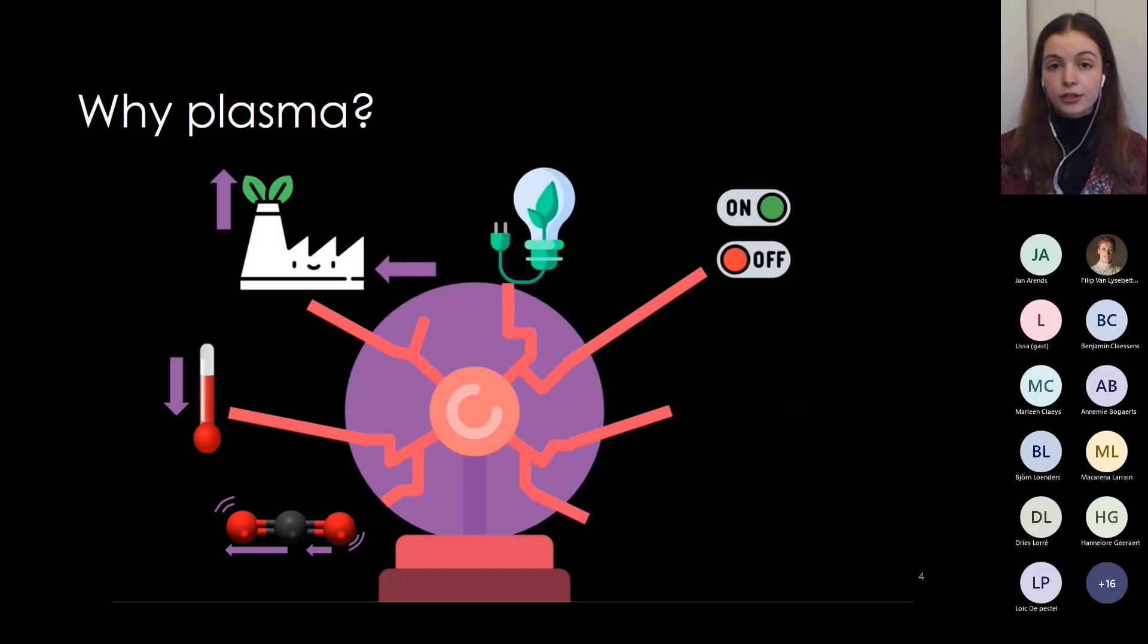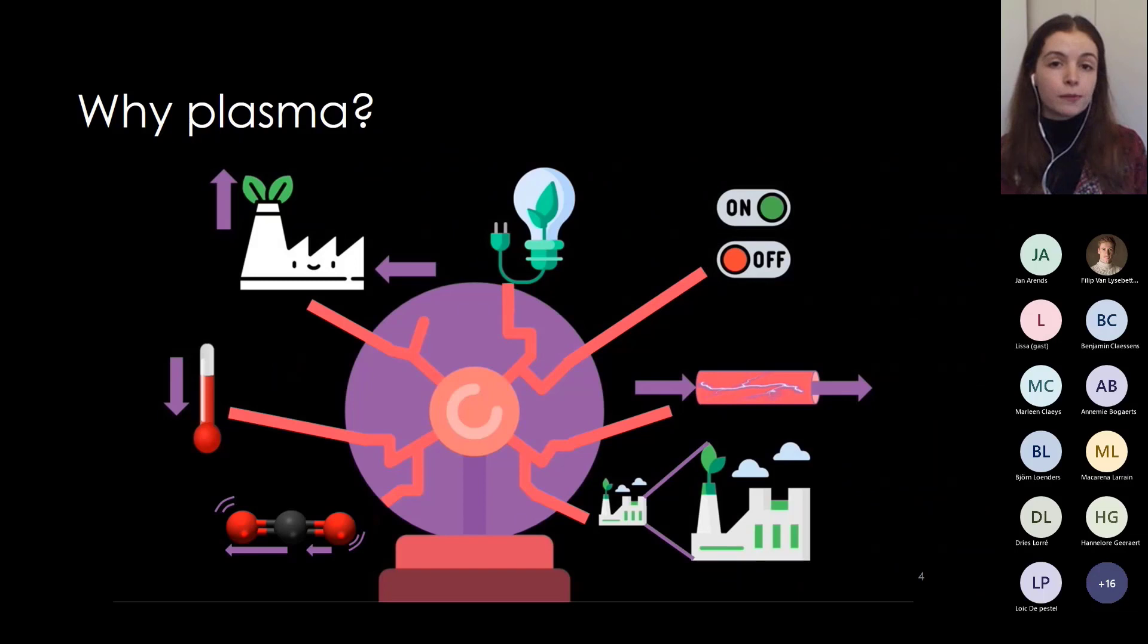For example, if it's a very sunny day, you can switch on your plasma reactors quite quickly to convert excess electricity from the solar panels into a fuel like methanol. Then you can design your reactor as such that it can be a continuous flow, which is more interesting for industry. And typically, plasma reactors are upscaled in parallel, which means you have a linear upscaling, which is again easier for industry.